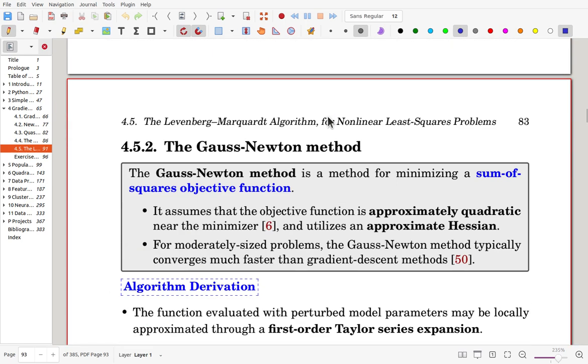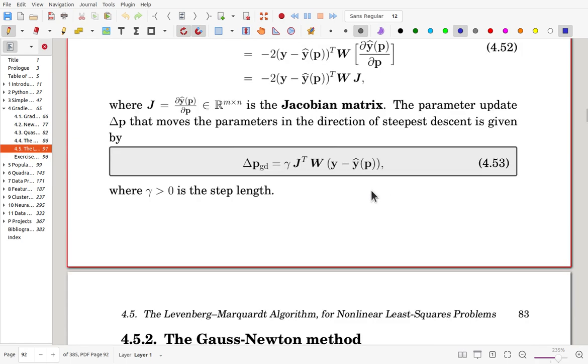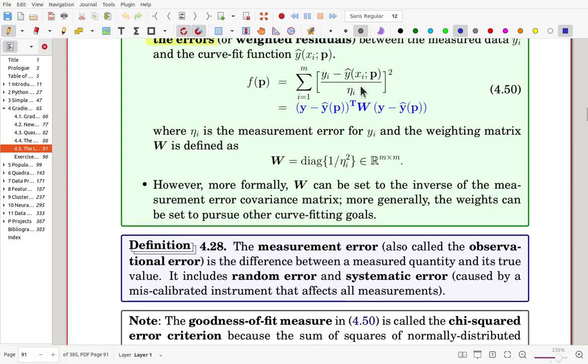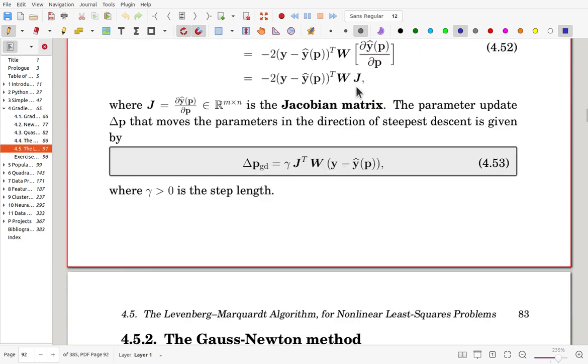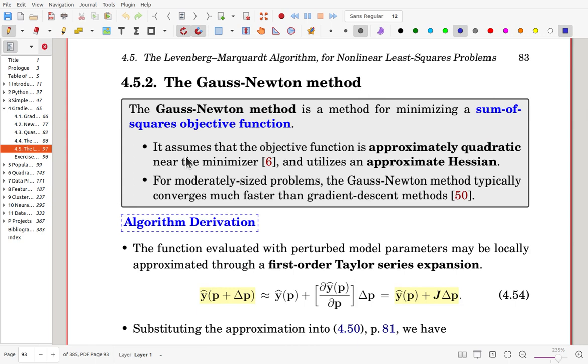Now we'll go to Gauss-Newton method. Gauss-Newton method is a method for minimizing sum of squares objective function as in our objective function. And the method assumes that the object function is approximately quadratic near the optimizer and utilizes an approximate Hessian. And now for moderately sized problems, the Gauss-Newton method typically converges much faster than the gradient descent method. But the problem size is larger, then we have to use the gradient descent method.